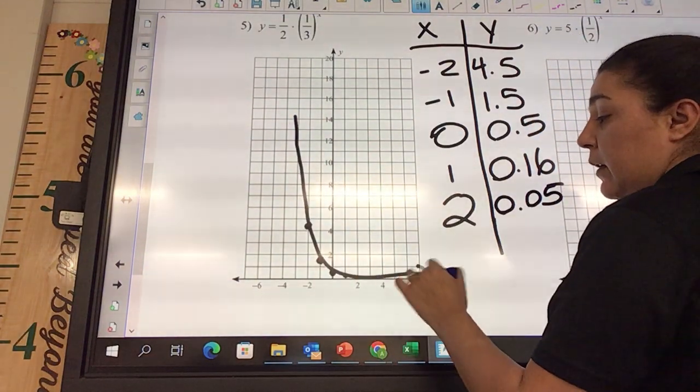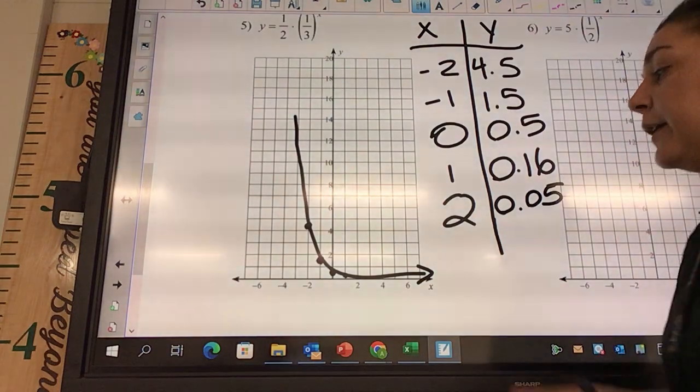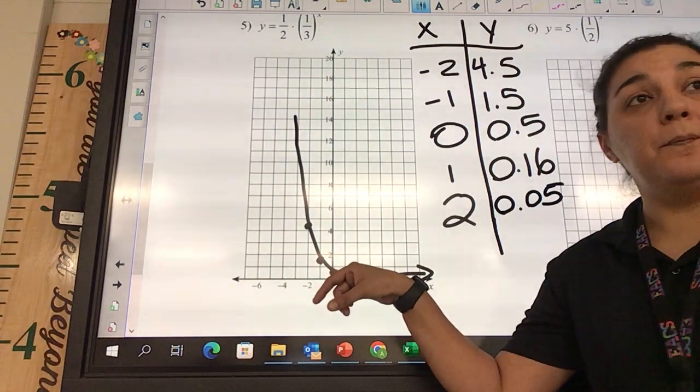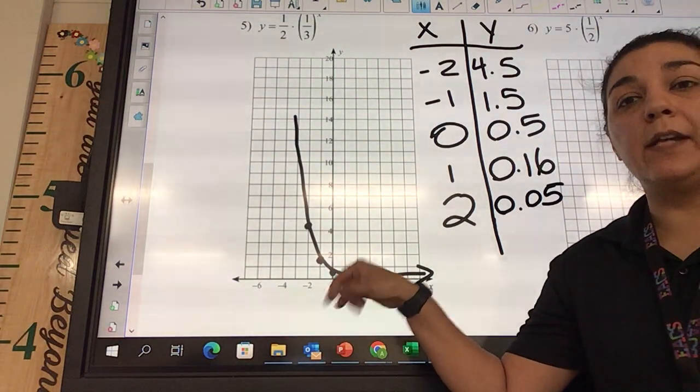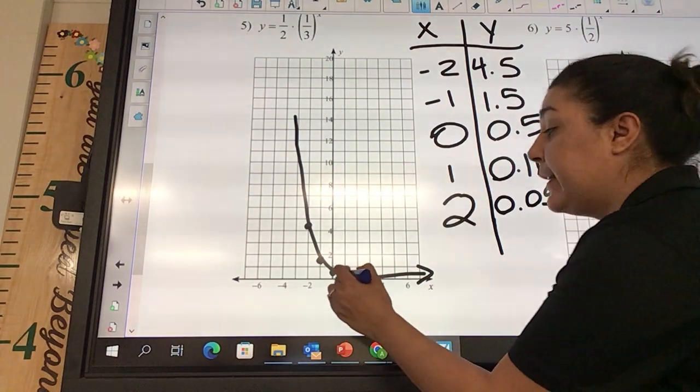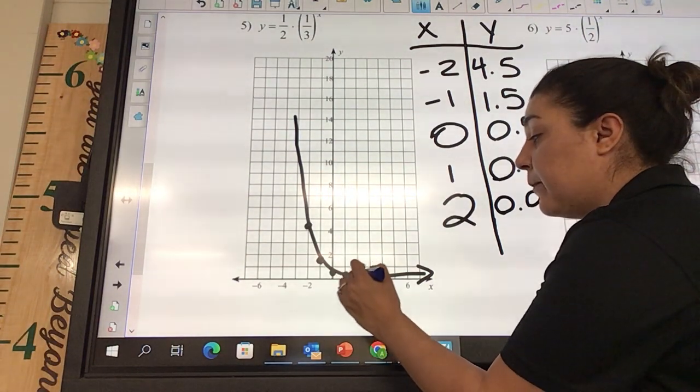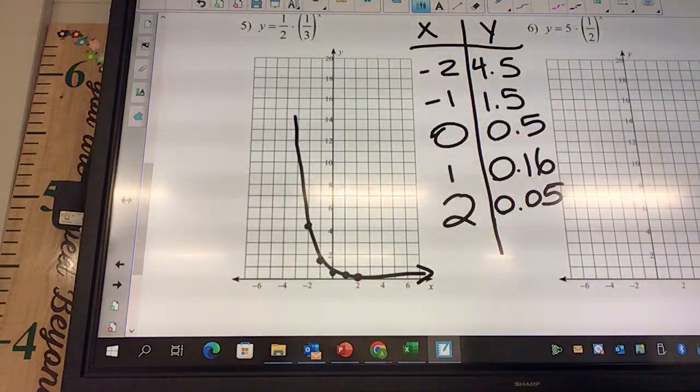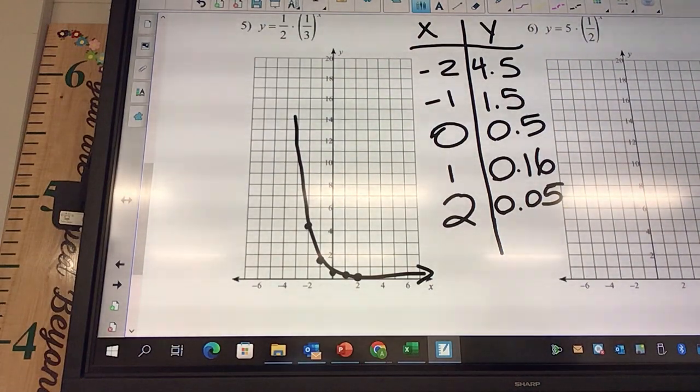Negative 2 and 4.5, negative 1 and 1.5, 0 and 0.5, 1 and 0.16, and 2 and 0.05. So then we can draw our little line. Look at this real quick - can you see these two dots really good? No. Okay, so fix them. I'm the one that's grading it. If I don't see your dots, minus 1. Do you see my dots?